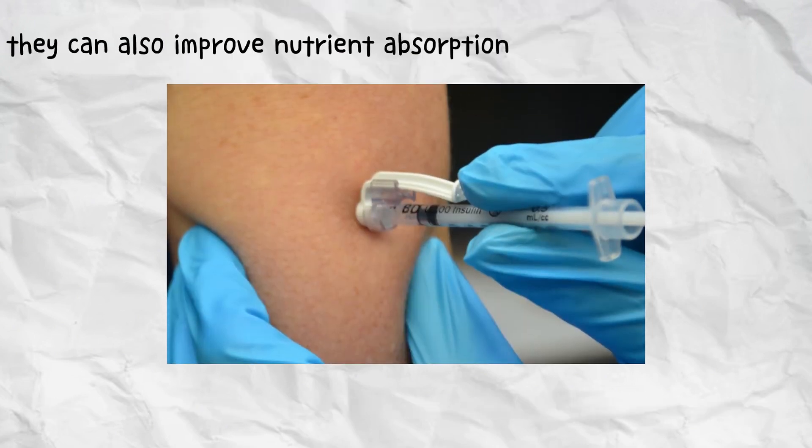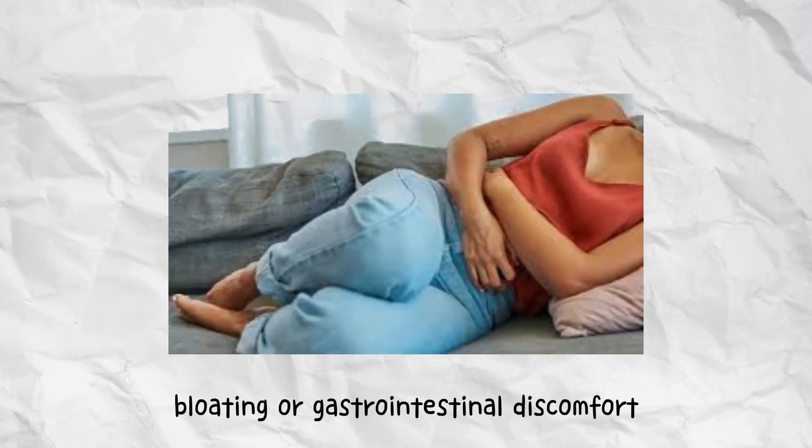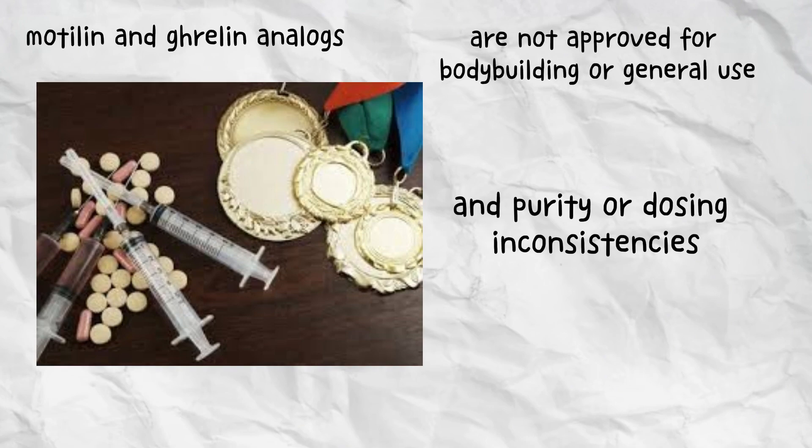They can also improve nutrient absorption and gut health by supporting rhythmic stomach contractions. However, excessive use may cause constant hunger, bloating, or gastrointestinal discomfort. While promising for metabolic research, motilin and ghrelin analogs are not approved for bodybuilding or general use, and purity or dosing inconsistencies are common in unregulated markets.